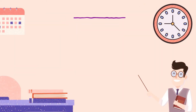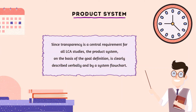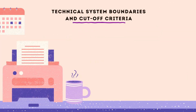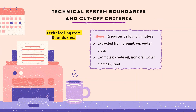Product systems: since transparency is a central requirement for all LCA studies, the product system, on the basis of the goal definition, is clearly described verbally and by a system flowchart. For technical system boundaries, inflows include resources found in nature, extracted from ground, air, water, and biotic sources — for example, crude oil, iron ore, water, biomass, and land.